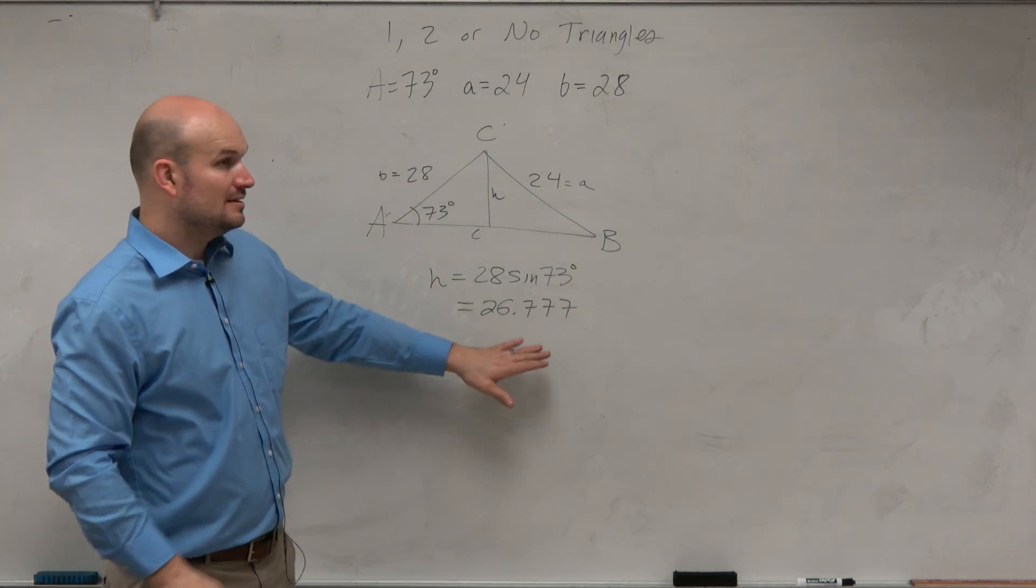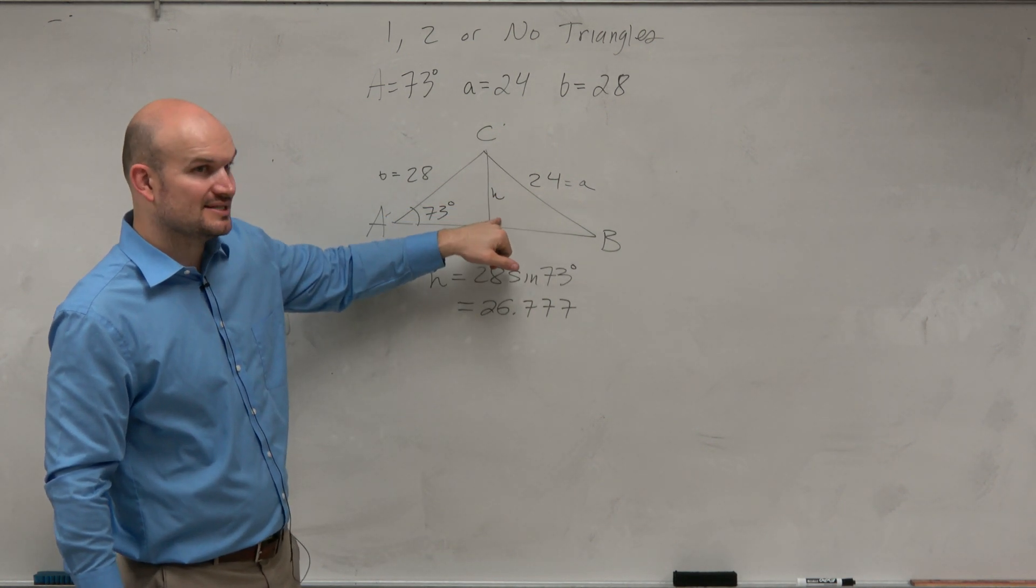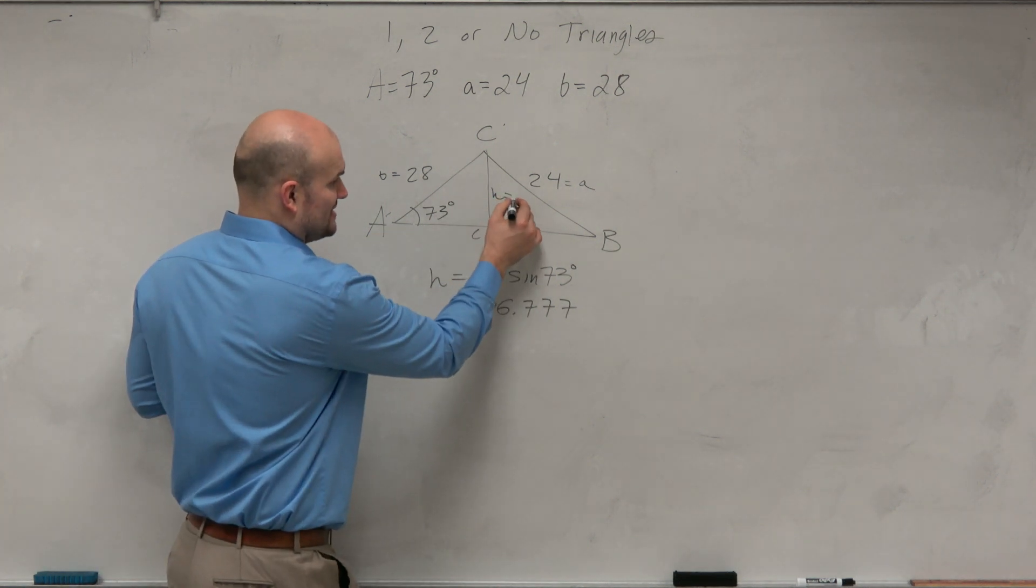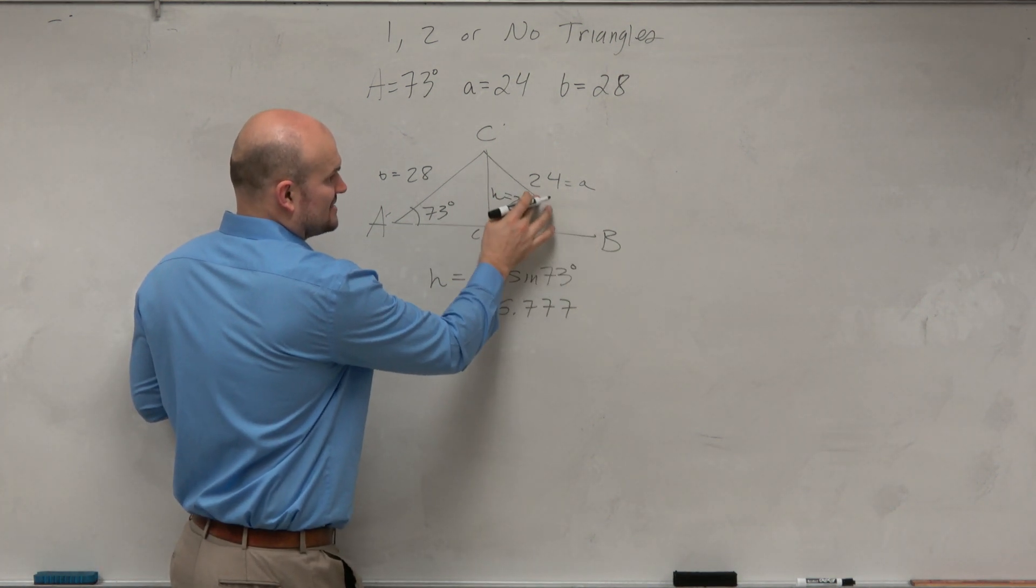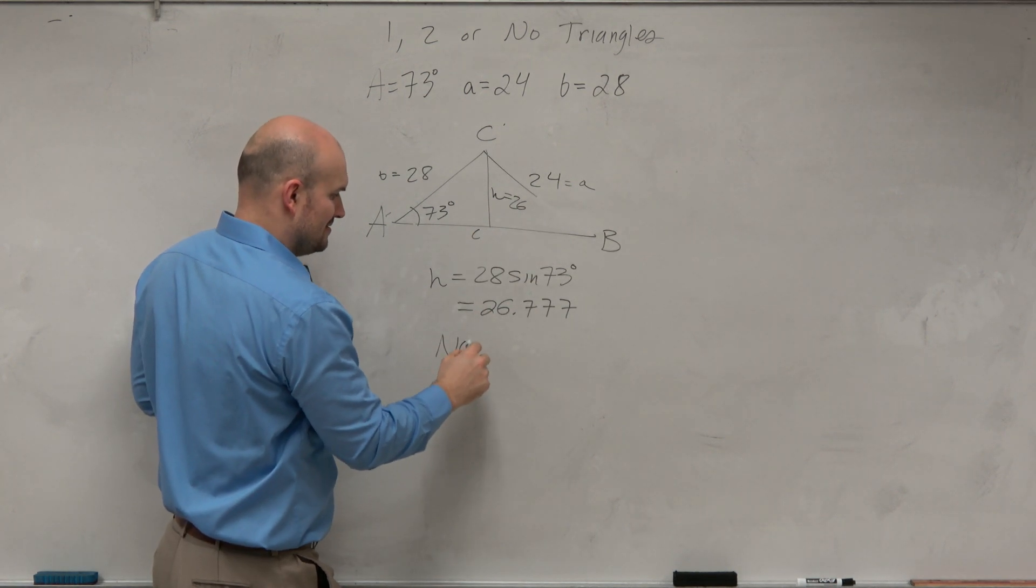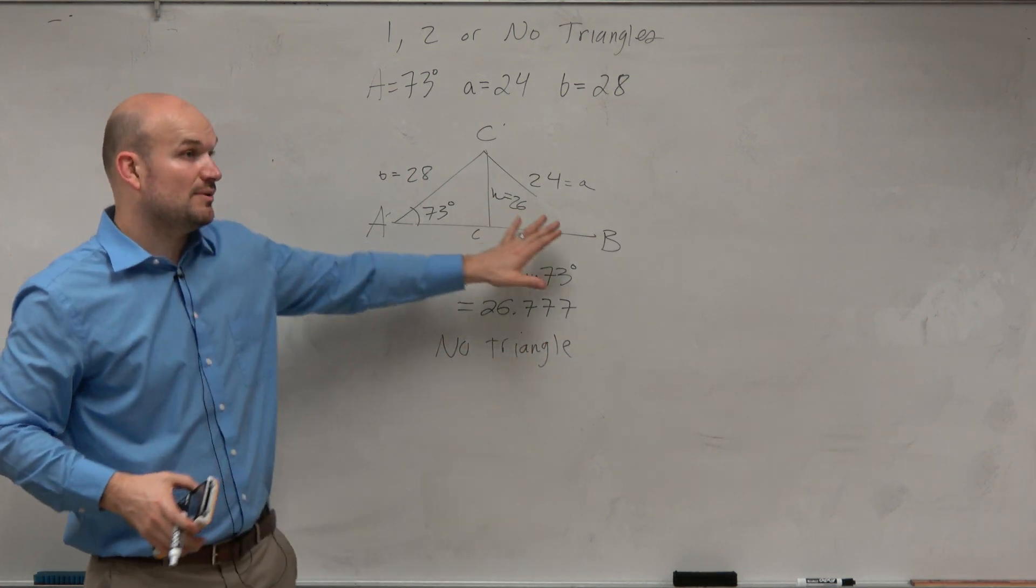Now, again, notice this is shorter than the height. So that may be no triangle. Right? If this is 26, and this is like 24, there's no triangle. Got it? OK. I can see what you mean now. If you parallel and ridge run, then you parallel from there. Right. So that's one way.